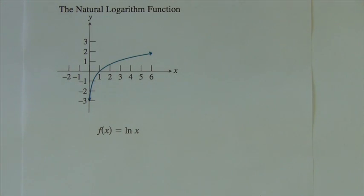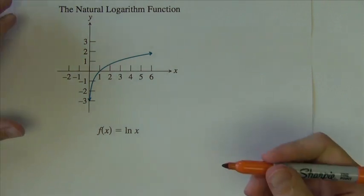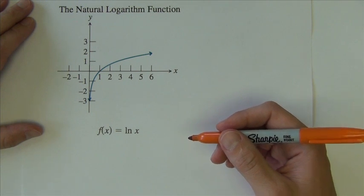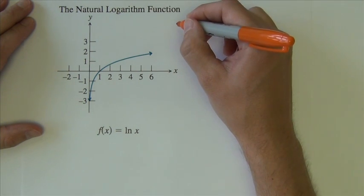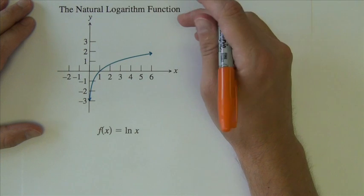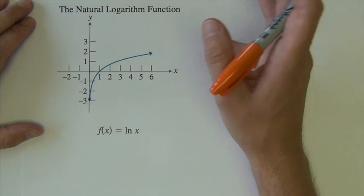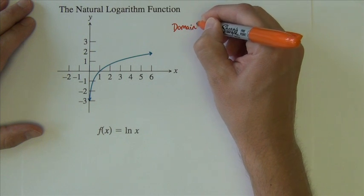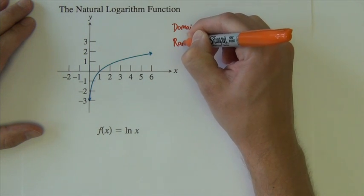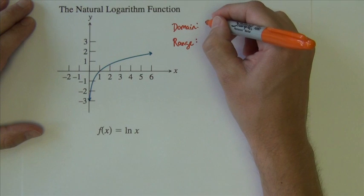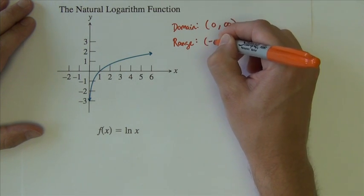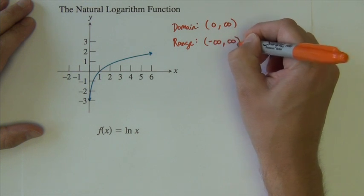Next we look at the logarithmic function, or specifically the natural logarithmic function. It is the inverse of the e to the x function that we just talked about. Because it's the inverse, it has a lot of the same characteristics, just the values have kind of been flip-flopped. For example, the domain and range of this function are just the reverse of what they were for the exponential function. This is 0 to infinity, this is negative infinity to positive infinity.